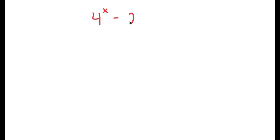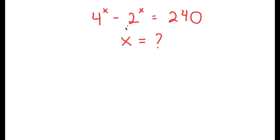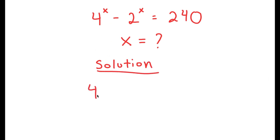In this video, I'm going to solve the equation 4 to the power of x minus 2 to the power of x is equal to 240. My only variable in this equation is x, so that's what I'm going to be solving for. Starting with the equation 4 to the power of x minus 2 to the power of x is equal to 240.